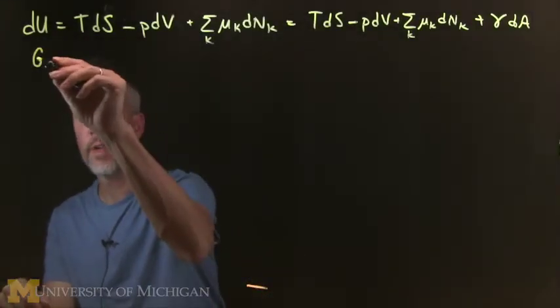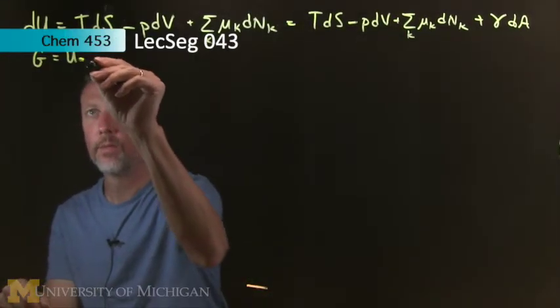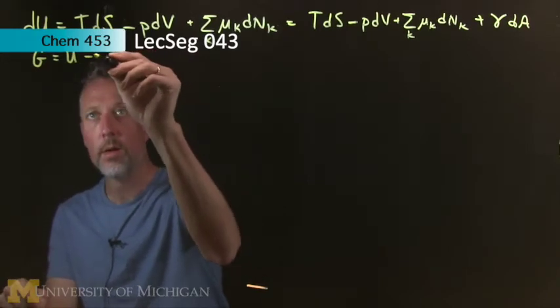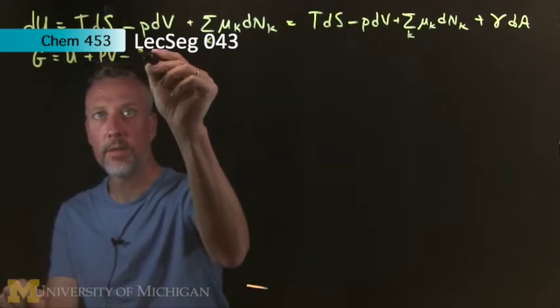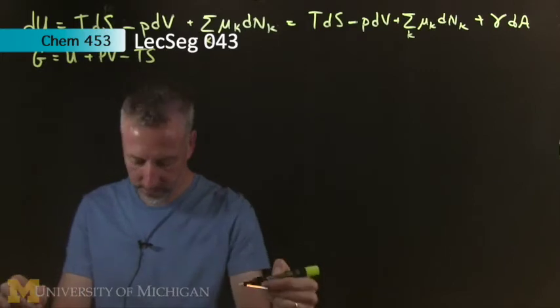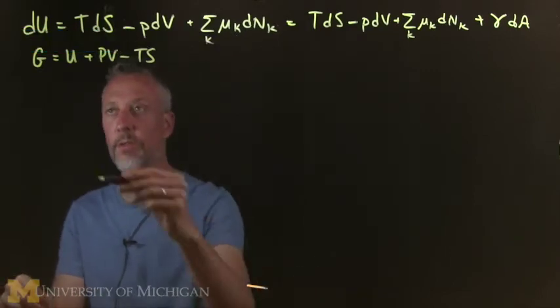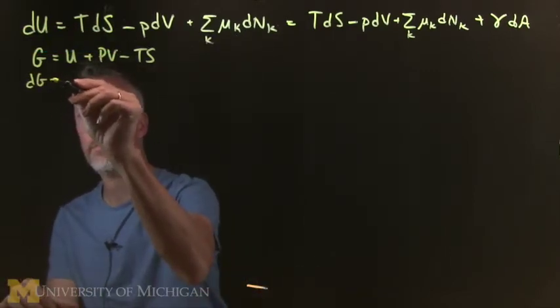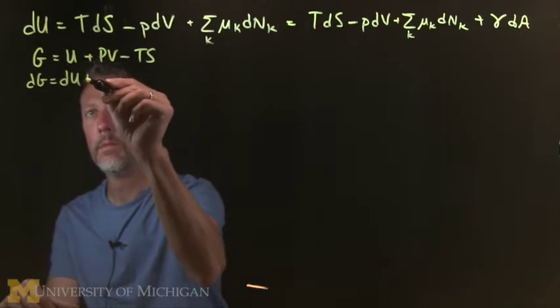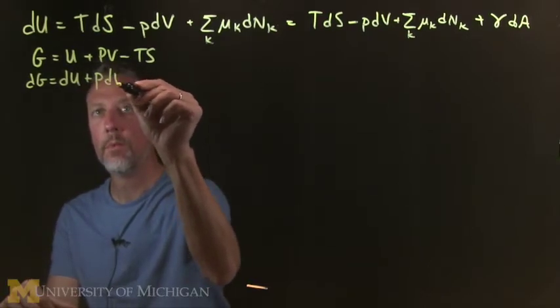To do this, we just write down what we know G is. G is U plus PV minus TS. Remember, we worked this all out. Do a differential of G.